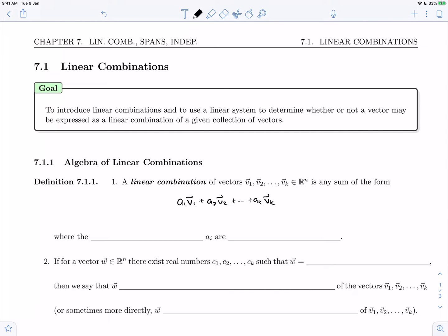Where the a_i's are coefficients and they are just real numbers. So a linear combination is nothing but scalar multiplication of vectors and addition of vectors.